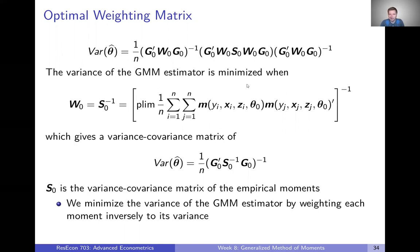If we substitute S₀ in place of W₀, a lot of things start canceling out and we end up with a much simpler asymptotic variance expression. This is certainly simpler to calculate, and it also gives us the minimum asymptotic variance.